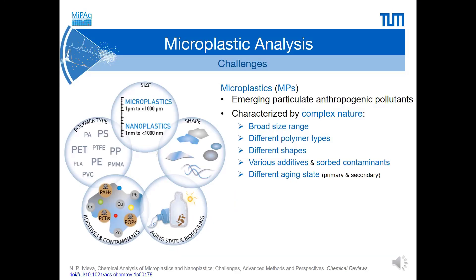As you may know, microplastics are emerging particulate anthropogenic pollutants and represent very challenging analytes. These particles are characterized by complex nature. We have to consider a broad size range from 1 µm to 1 mm, or even up to 5 mm for large microplastics. We have different polymer types with various chemical compositions, including conventional and bioplastics. Microplastics can have different shapes: spheres, irregular particles, fibres, films, and foams. Also, various additives and surface contaminants can be present.